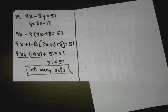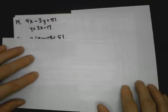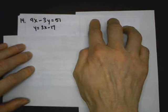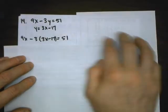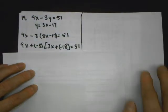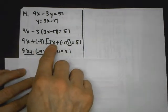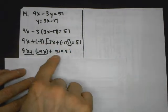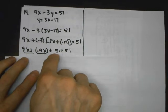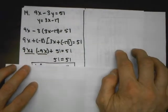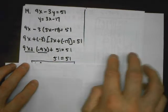Number 14: select which statement is true about the solution. I start solving — y is already isolated, so I plug the expression into the other equation where y goes. I do the rule for subtraction, then distribute negative 3 times 3x and negative 3 times negative 17; negative times negative is positive, 3 times 17 is 51. Combining like terms, my x's cancel out — this is true, so that's infinitely many solutions.